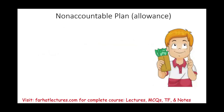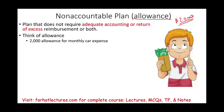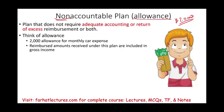Now let's talk about the non-accountable plan — think of it as an allowance. The plan does not require adequate accounting records or return of excess reimbursement, or both. Simply put, the company gives you $2,000 for the month as an allowance to use for business travel, meals, or whatever business expenses you're required to carry on. If they give you a $2,000 monthly car expense allowance, you don't have to return it if you don't use it all — but this amount is taxable to you. Reimbursement amounts received under this plan are included in gross income. For example, $2,000 times 12 means $24,000 of taxable income added to your W-2.